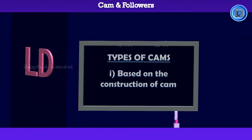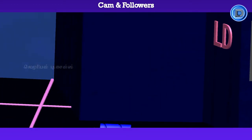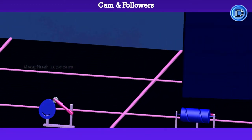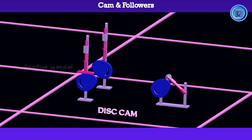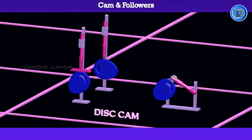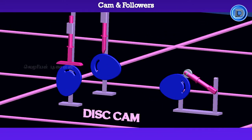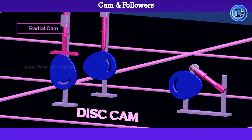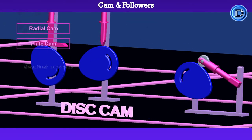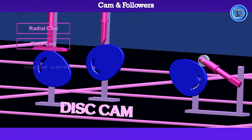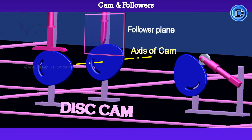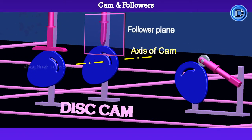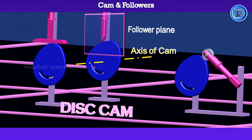Let's see the types of cam. In disk or plate cams, the followers reciprocate or oscillate in a plane perpendicular to the axis of the cam.